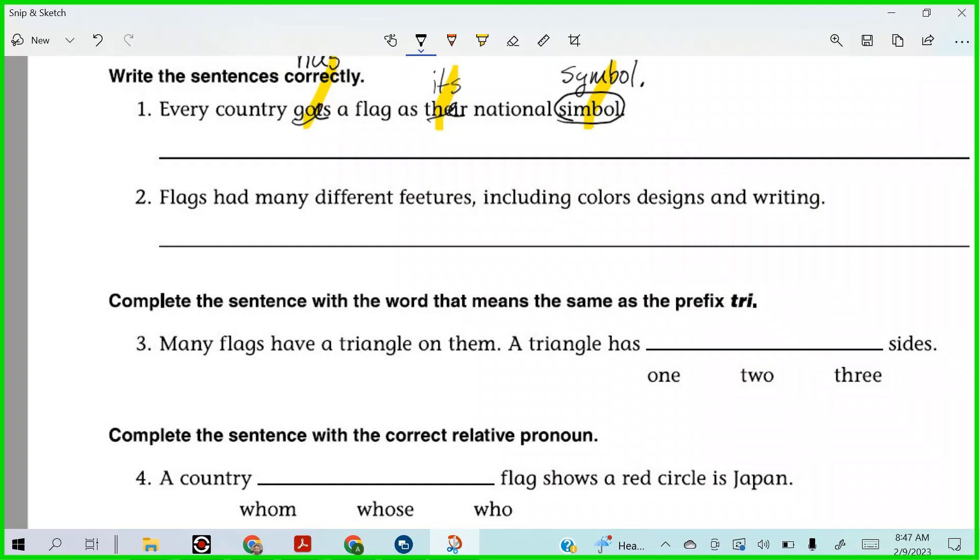Vinny? Yeah, let's change had to have. So, let's read it now. Flags have many different features, including colors, designs, and writing. I think we have to figure out where to place our commas in this one. Nate, what do you think? Features is spelled wrong. Features is spelled wrong. Could you give me the spelling on that, mister? F-E-A-T-U-R-E-S. F-E-A-T-U-R-E-S, right? Yeah, very good.